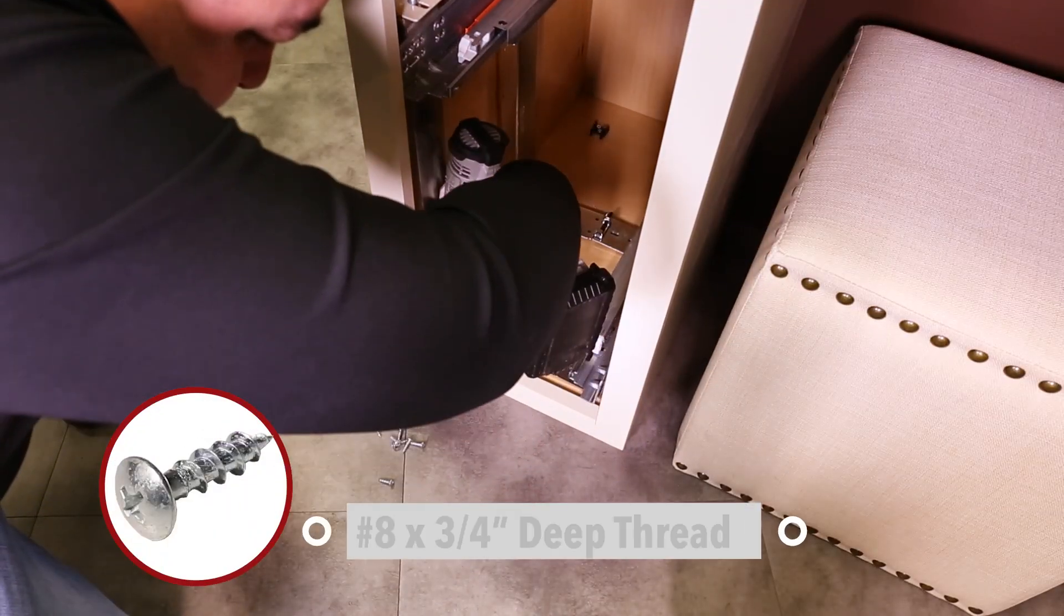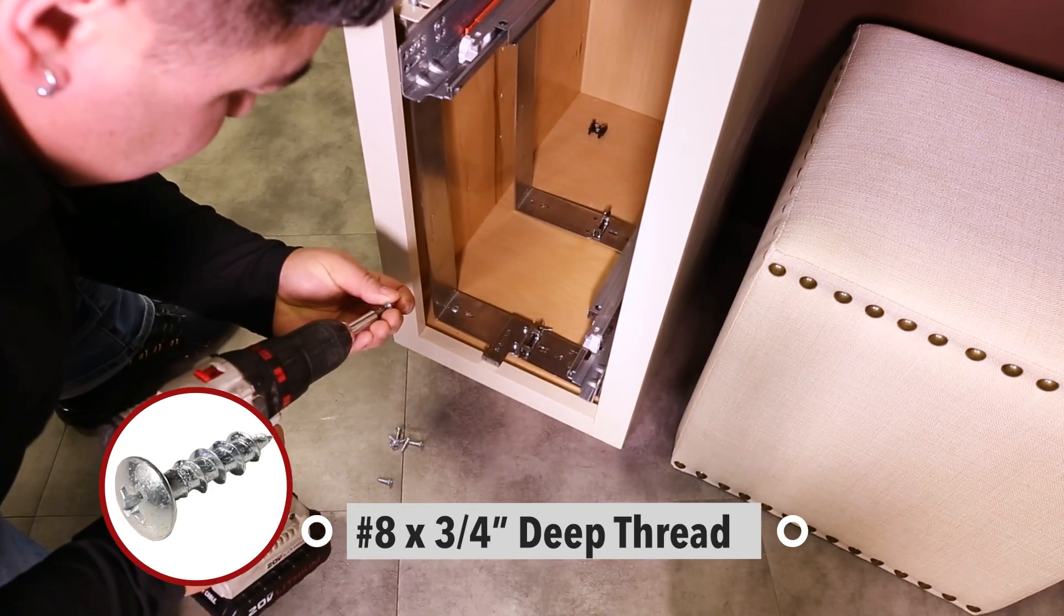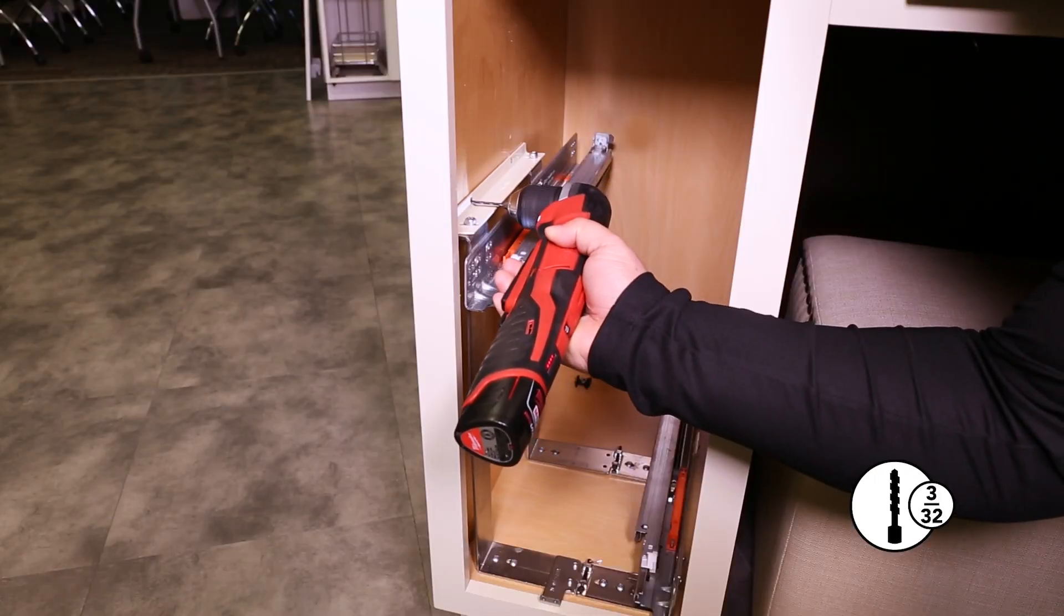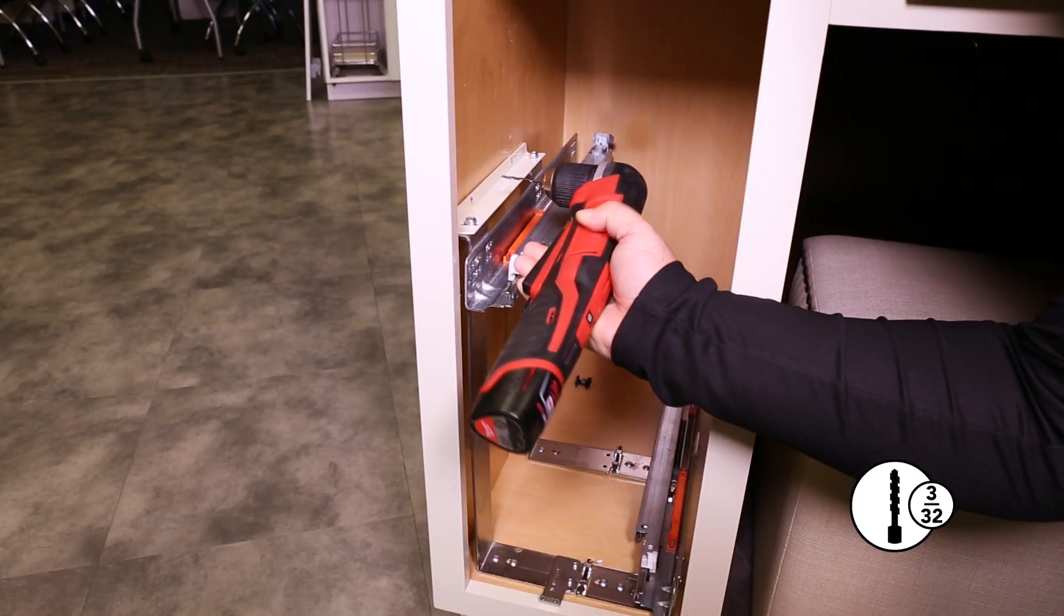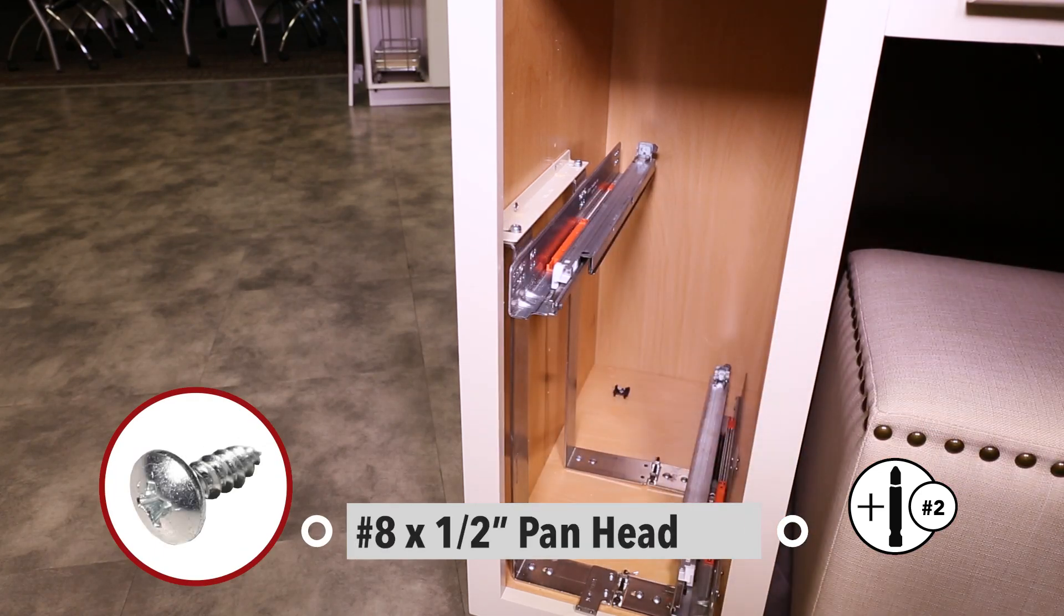Mount the bottom of the slide set to the floor of the cabinet using the number 8 by 3/4 inch deep thread screws. Pre-drill the two holes in the side wall, then mount the slide set using the number 8 by 1/2 inch pan head screws.